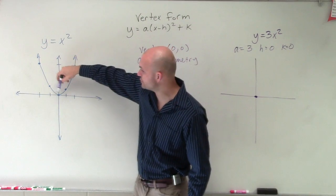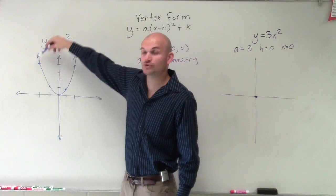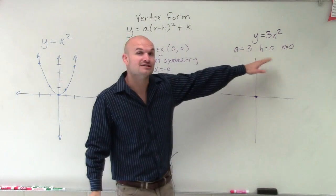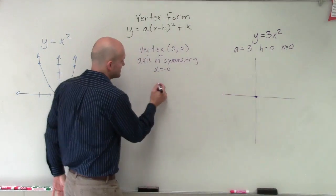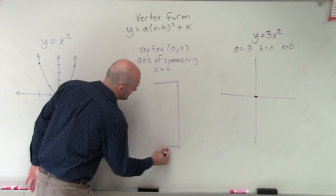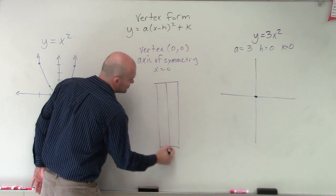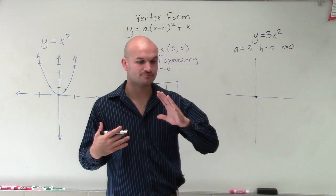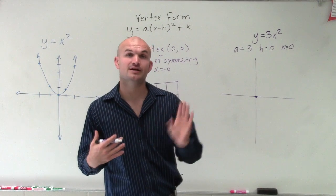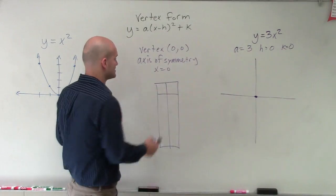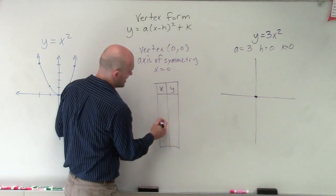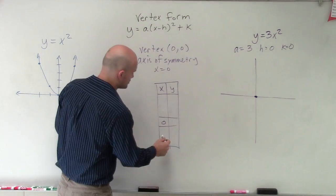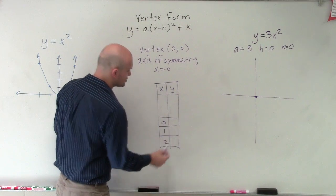Well, when a equals 1, you can see you go over 1, up 1. Over 2, up 4. But that's not going to be the case when my a is changed. So to see how this is going to be affected, I need to go back and create a table of values. Now, I'm only going to have to do this for two values, either to the left or to the right. And then what I'll use is I'll use my symmetry to reflect over the axis of symmetry. So we know that 0 is going to be my axis of symmetry. So let's just pick two points to the right. Let's just pick 1, and let's just pick 2.